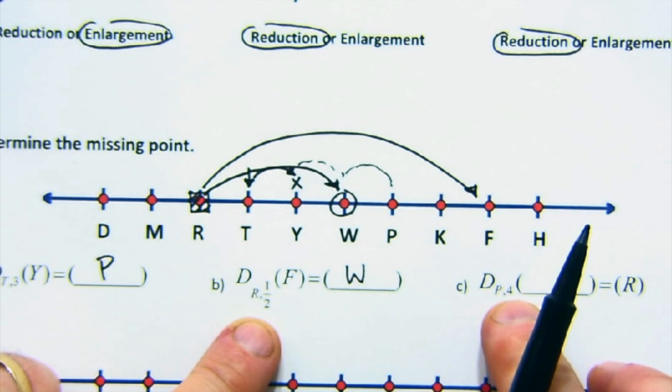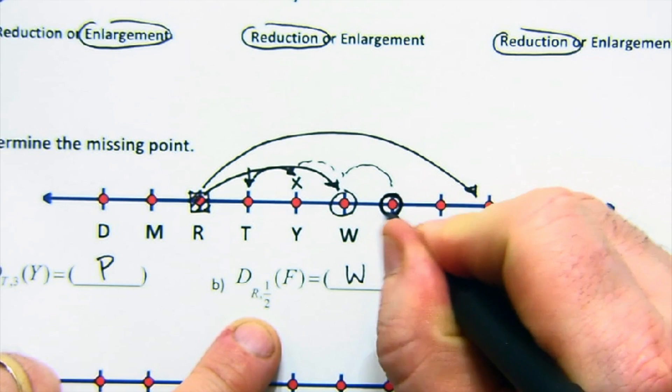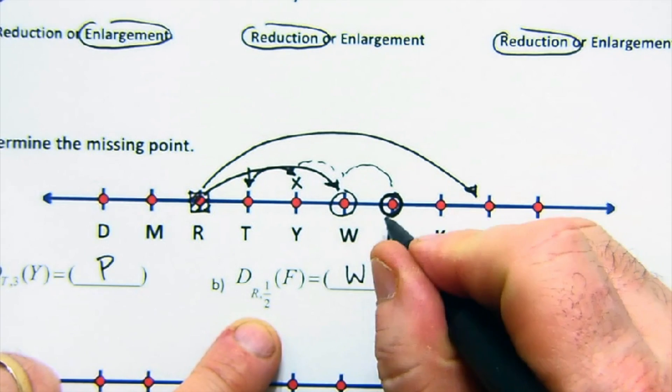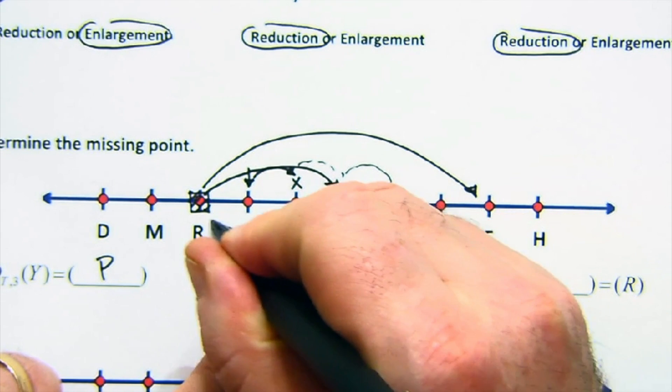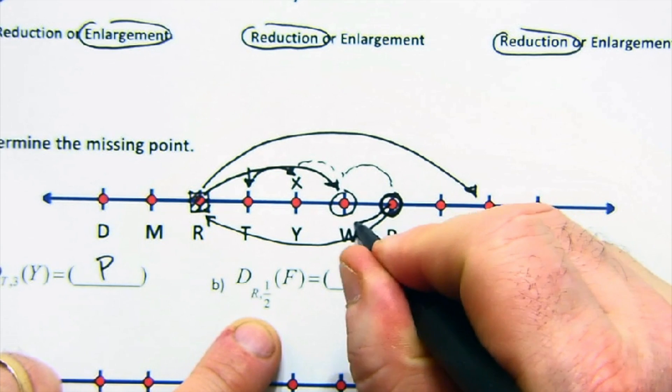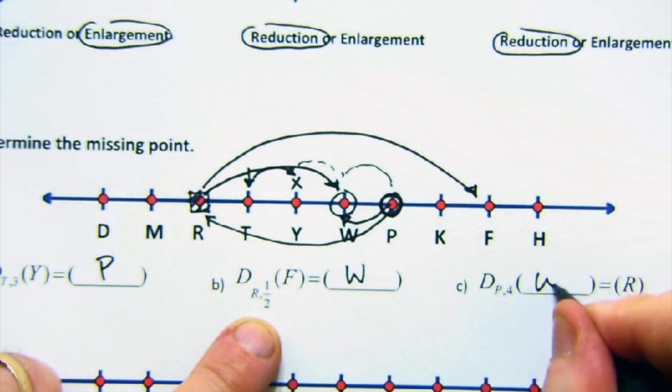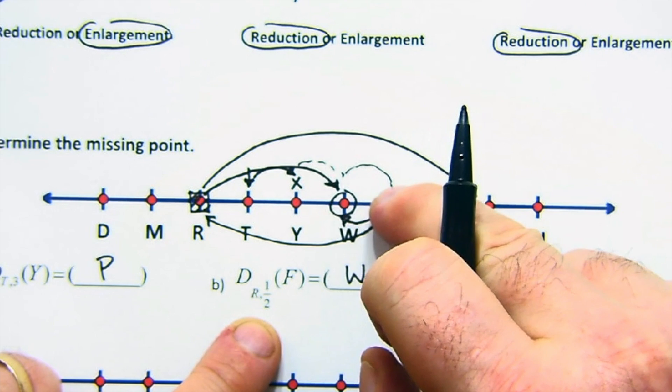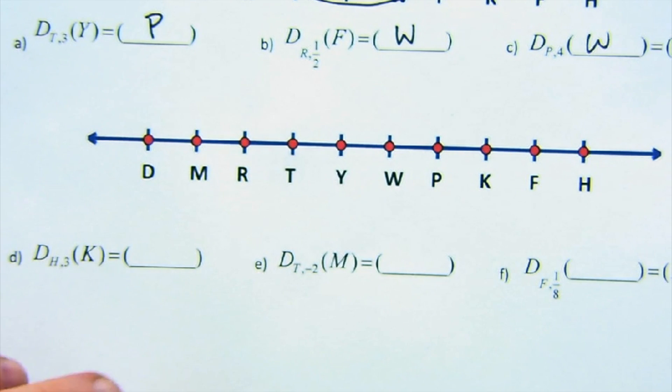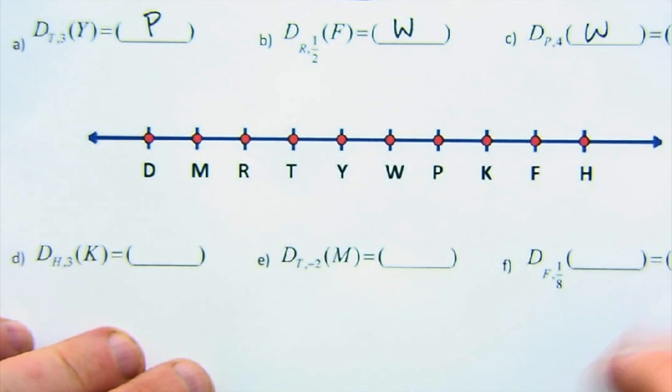Here we are at P. So P is our center. And then we're going to dilate something four times to land at R. So the final result is R, and it happens to be one, two, three, four away. So we must have been dilating W, because if we dilate W, four times one, two, three, four, it lands on R. It's a little messy here. That's why I made a couple of these to demonstrate, so I can write on them and not get too messy.